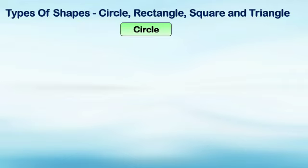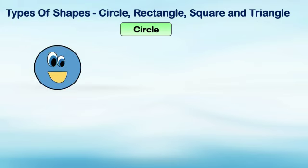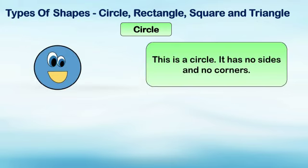Our first shape is circle. Kids, this is a circle. It has no sides and no corners. As you can see, the circle is round all the way, with no sides and no corners.